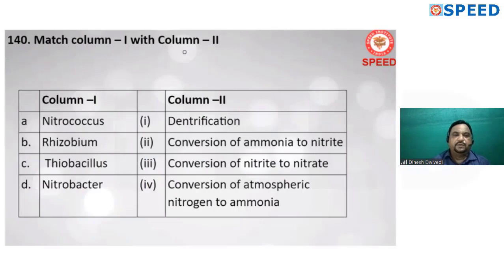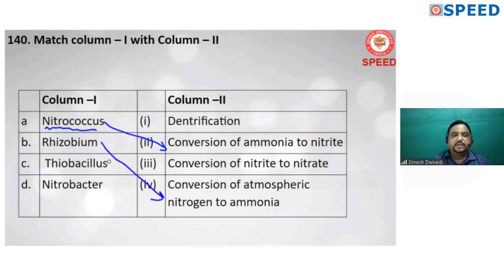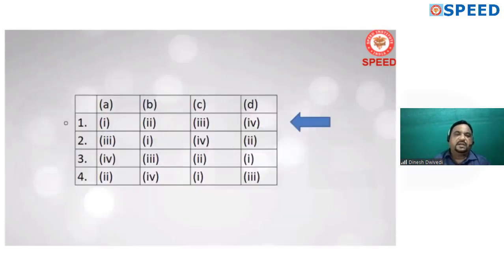Match column 1 with column 2: Nitrococcus — conversion of ammonia to nitrite. Thiobacillus — denitrification. Nitrobacter — conversion of nitrite to nitrate. Alternate 1 is correct.